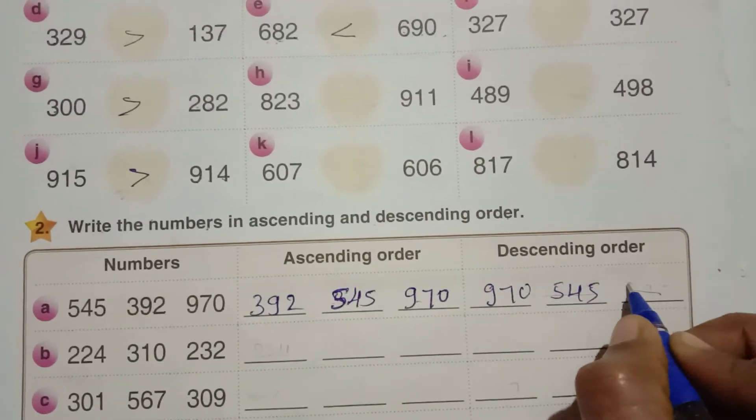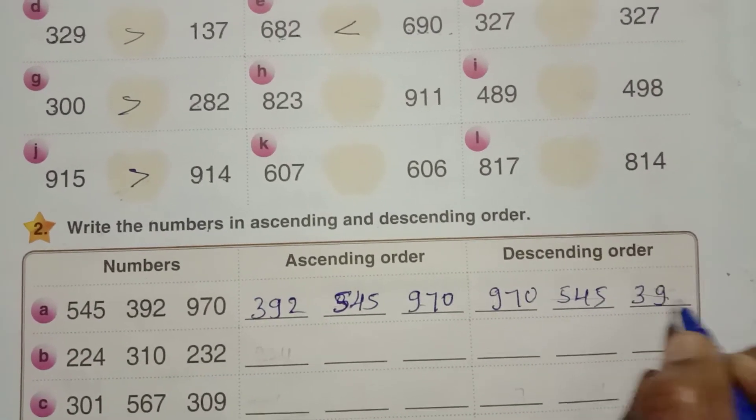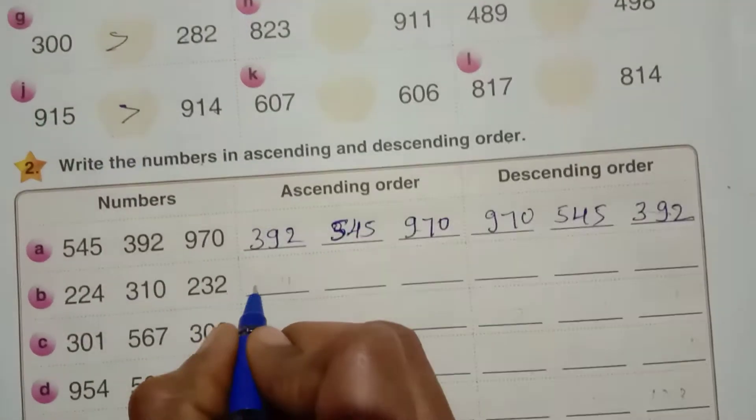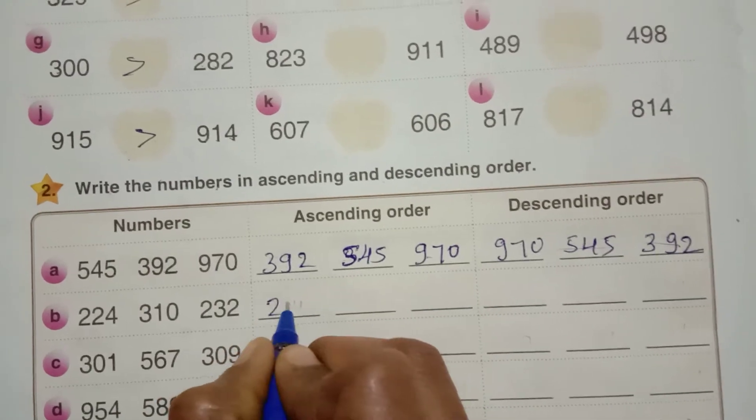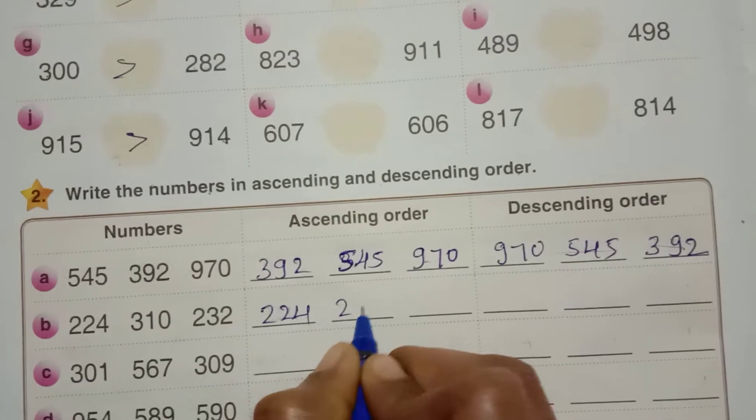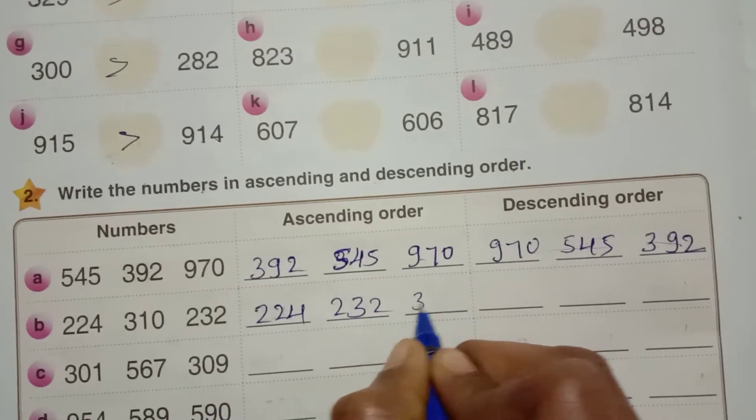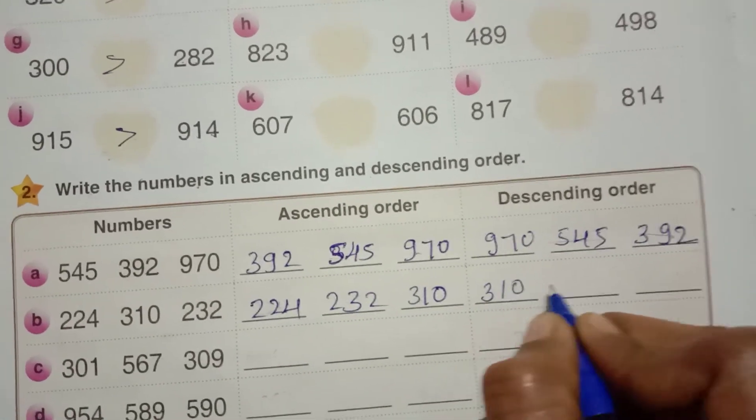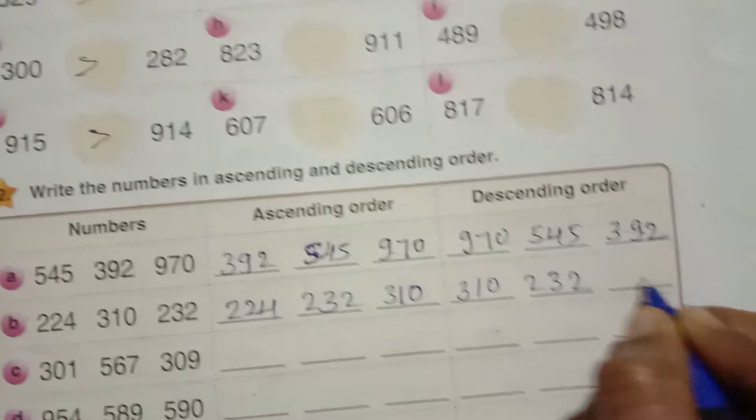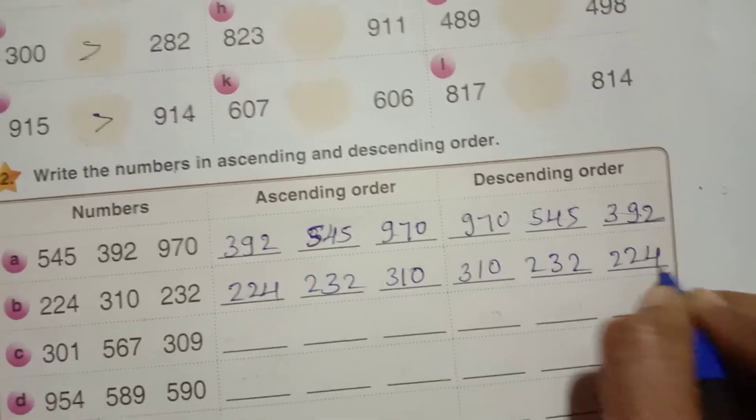Next, 392. Here first you write 224. 232, 310. Descending order, 310, 232, 224.